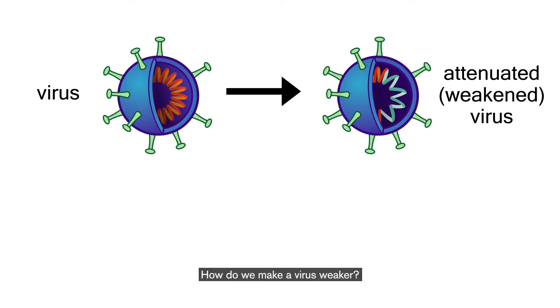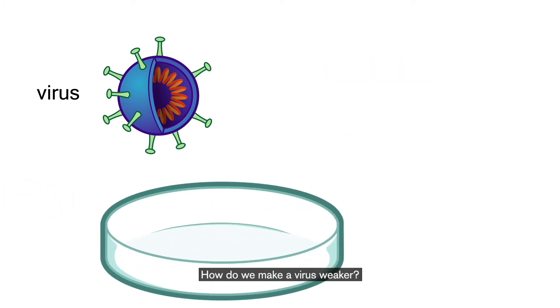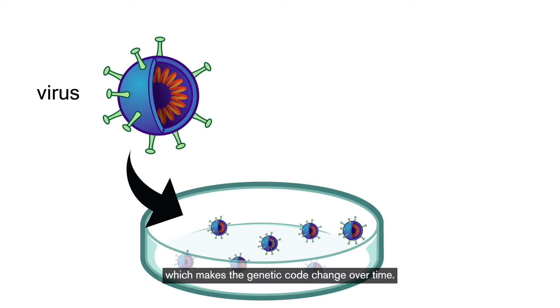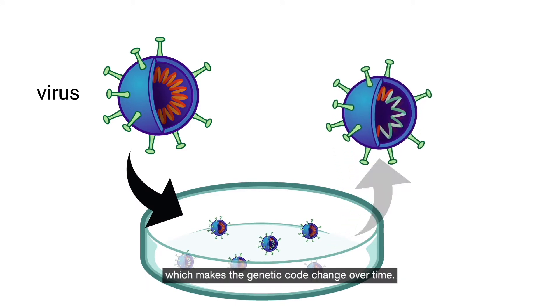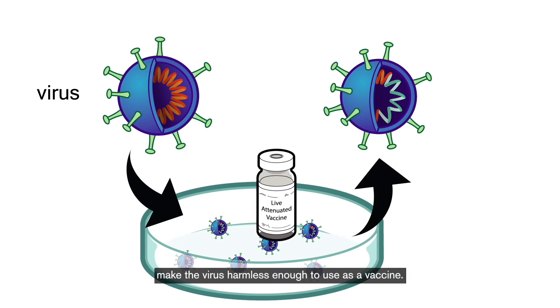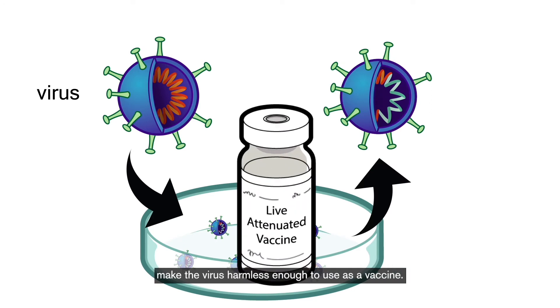How do we make a virus weaker? Often by forcing the virus to grow in unusual conditions, which makes its genetic code change over time. Within weeks or months, those changes make the virus harmless enough to use as a vaccine.